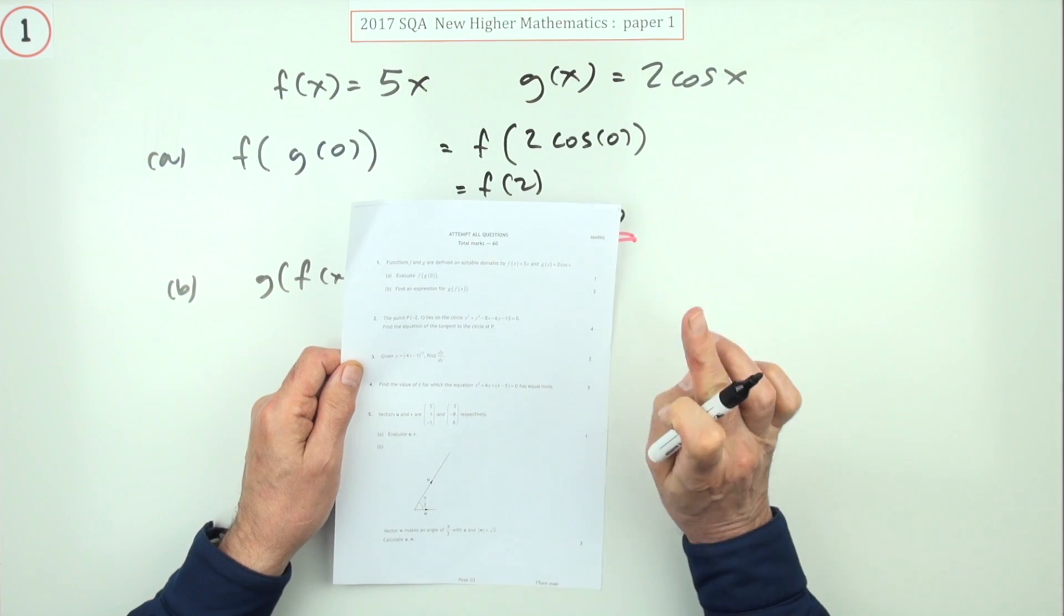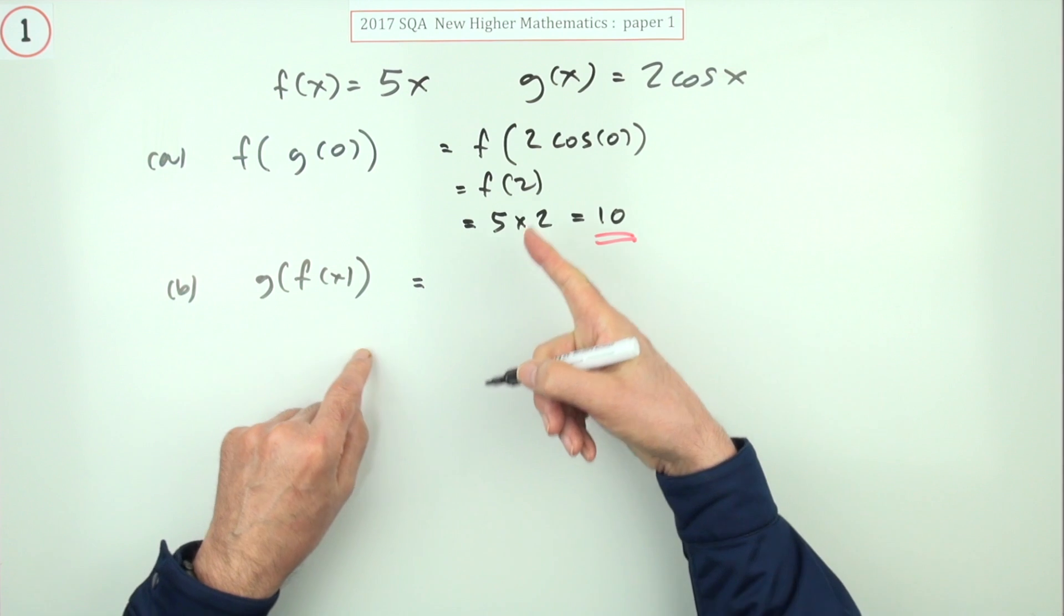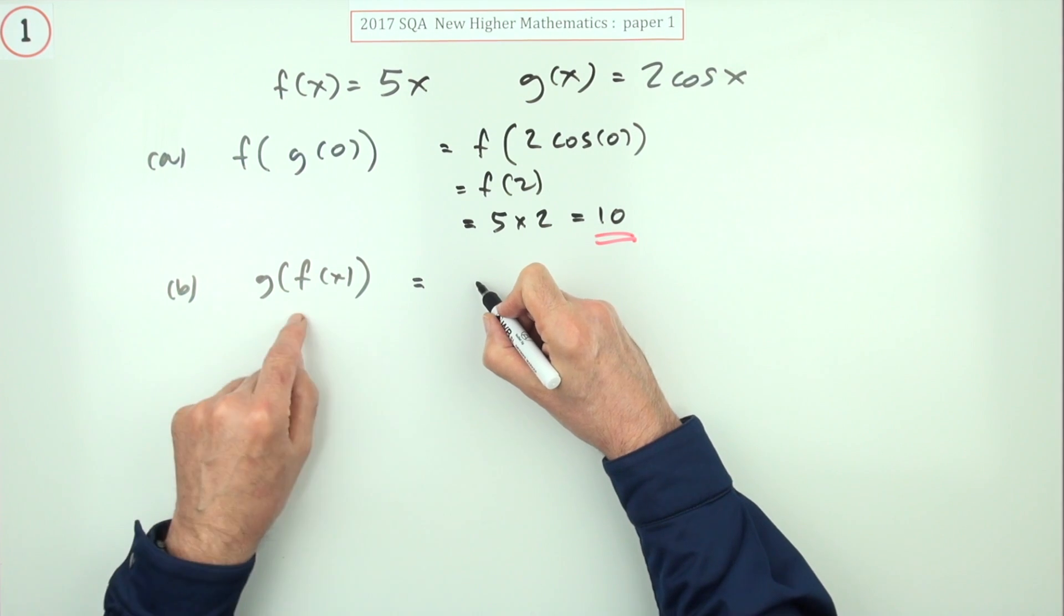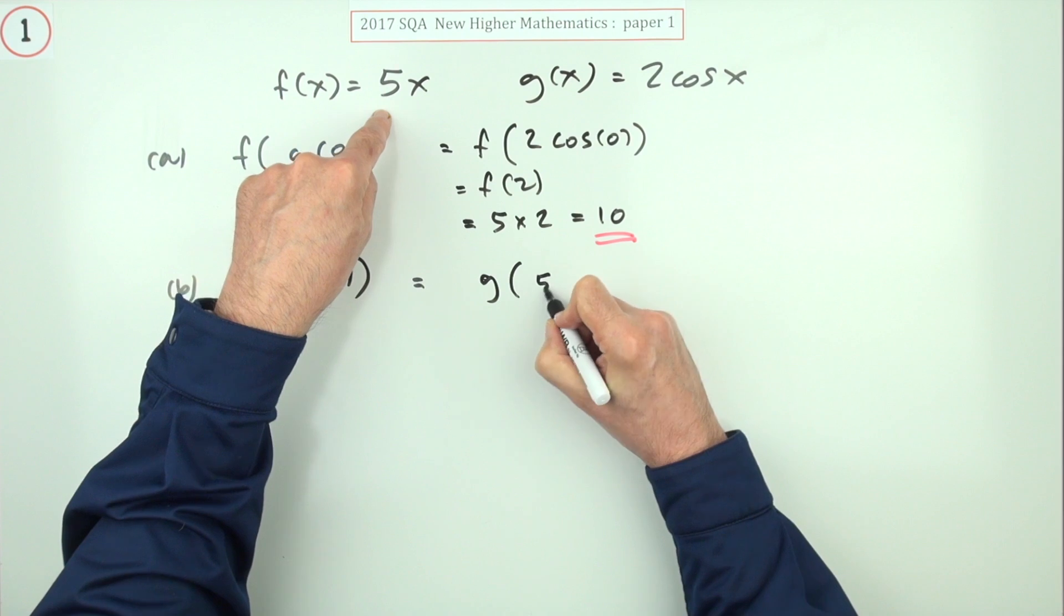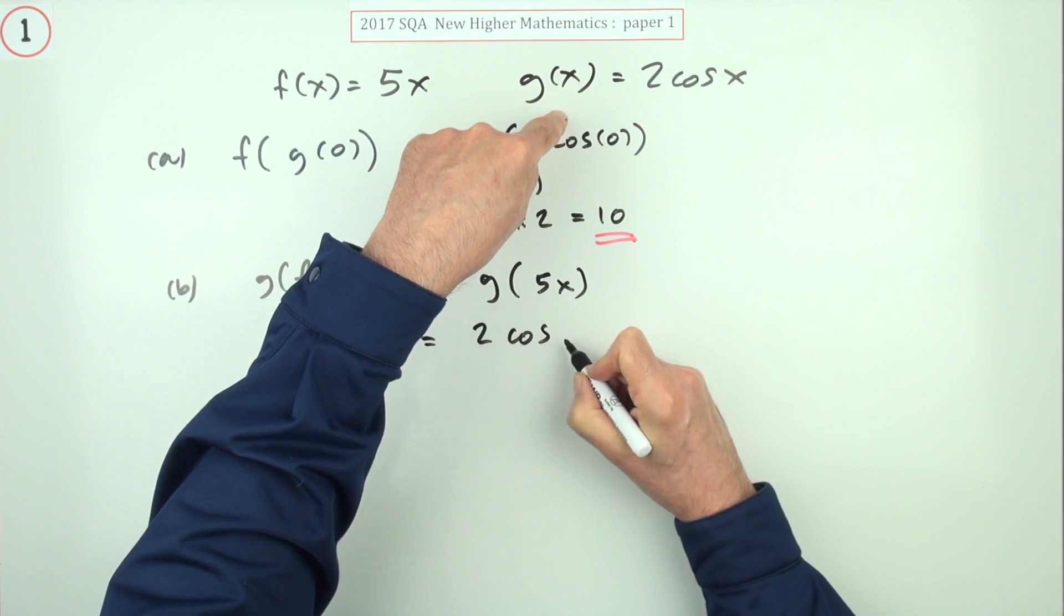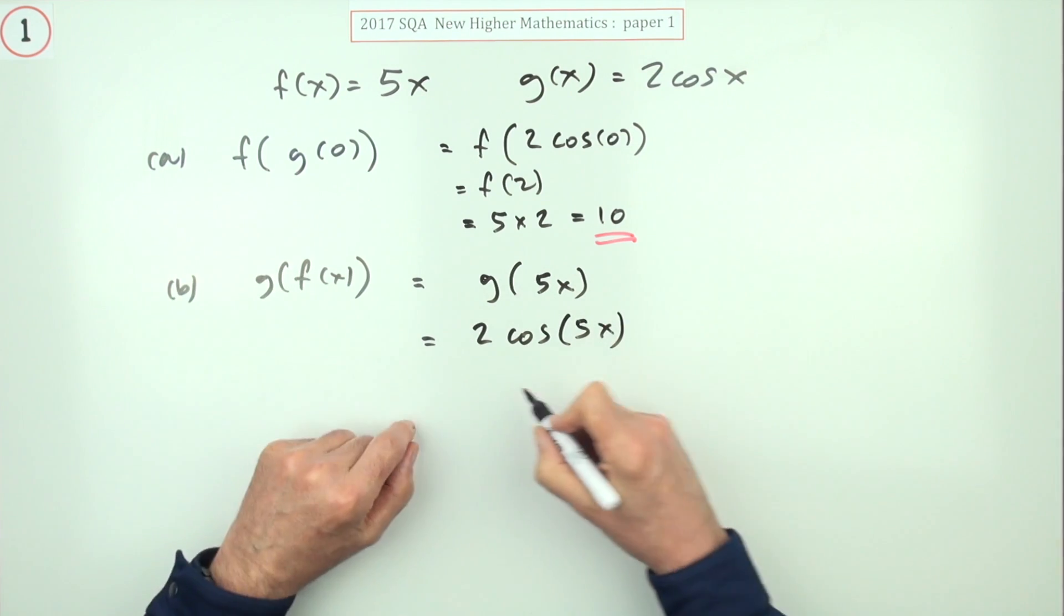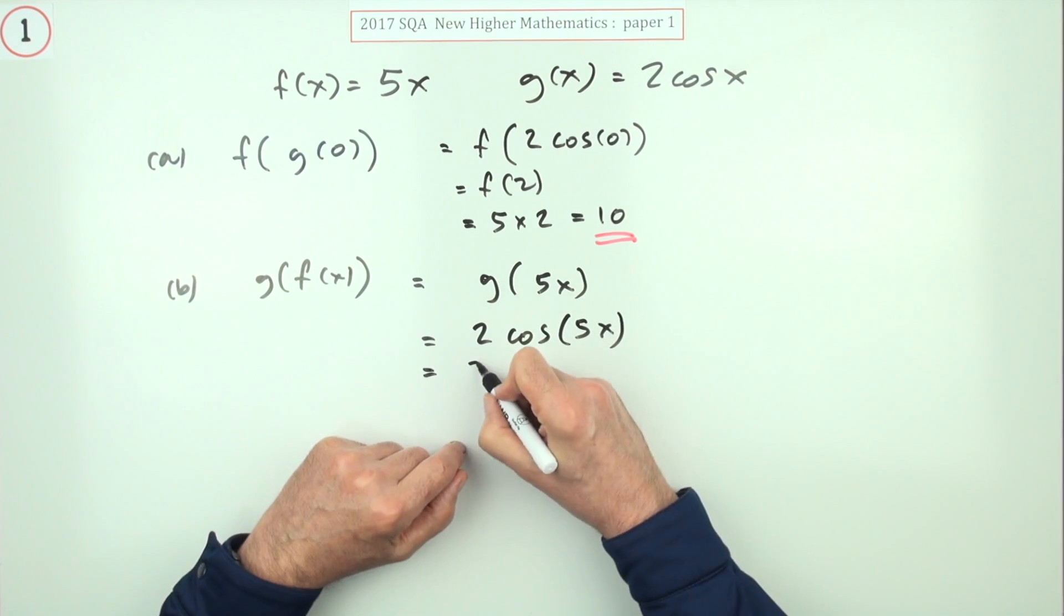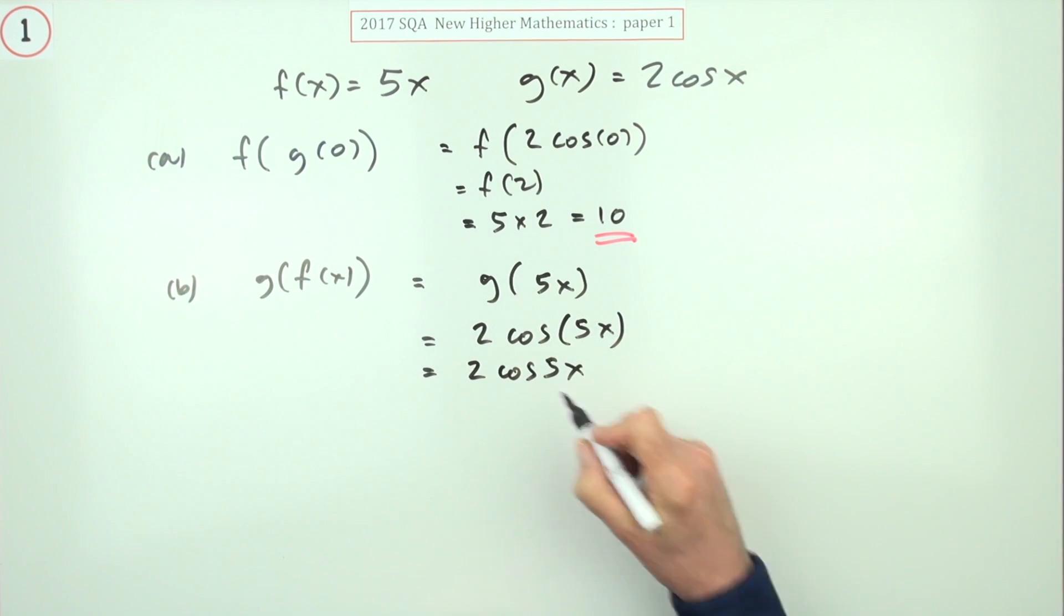Part B, for two marks, find an expression for g of f of x. That strikes me as being faster than part A, because g of f of x means g acting on 5x. And what does g do? It does two times the cosine of whatever it acts on, which is 5x, and that seems to be more or less it. How else could I write that? Two cos 5x. I'll just leave the 5x in the bracket.